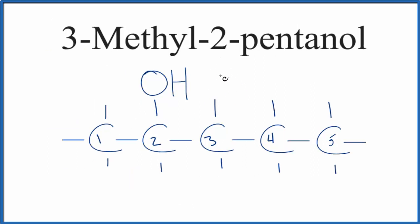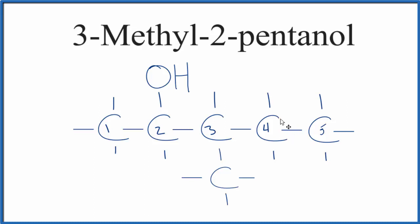So we could put it up here, or we could put it down here. These bonds, they can rotate, so it really doesn't matter. Let's replace this hydrogen with a methyl group. And that gives us the structural formula for 3-methyl-2-pentanol.